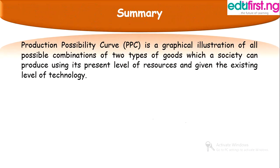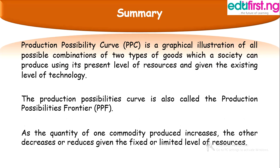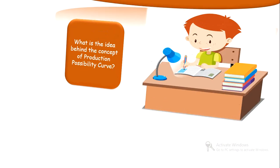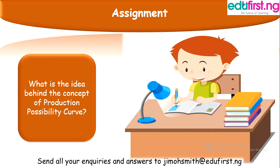In summary, production possibility curve is a graphical illustration of all possible combinations of two types of goods which a society can produce using its present level of resources and given the existing level of technology. We have also learned that the production possibilities curve is also called the production possibilities frontier. Also, as the quantity of one commodity produced increases, the other decreases, given the fixed or limited level of resources. Here is an assignment for you: what is the idea behind the concept of production possibility curve? Thank you for your time, see you in a subsequent lesson.